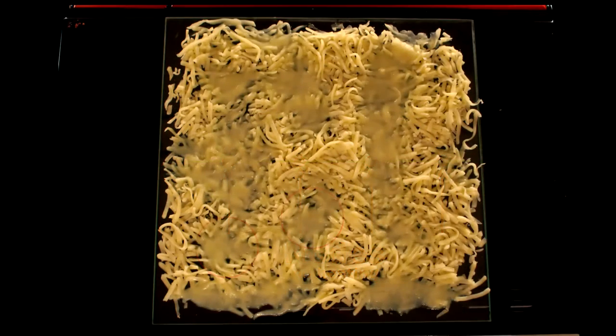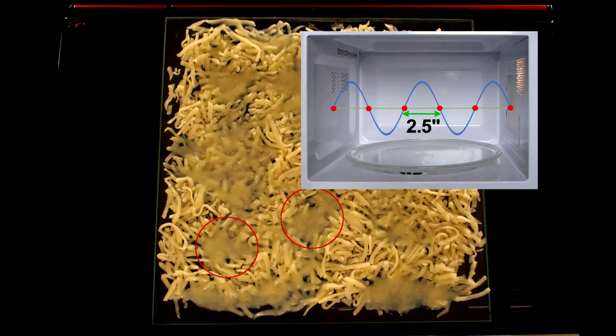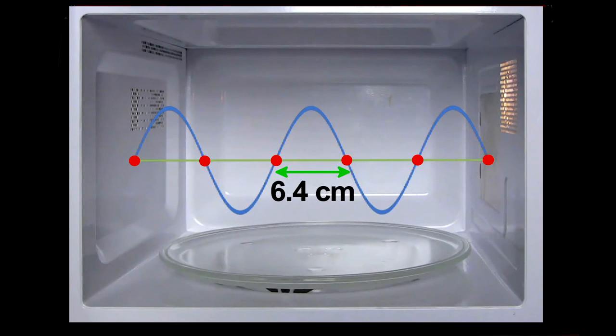If I measure the distance between melted cheese spots, I find about two and a half inches – that would be half the wavelength, the distance between nodes, and is pretty close to the actual wavelength of microwave radiation used.